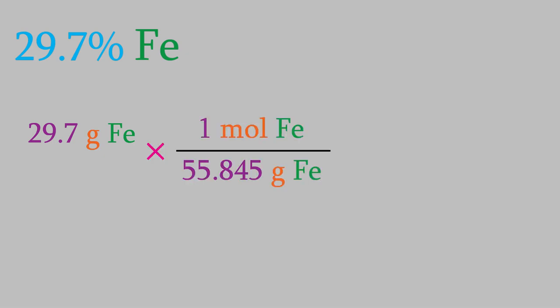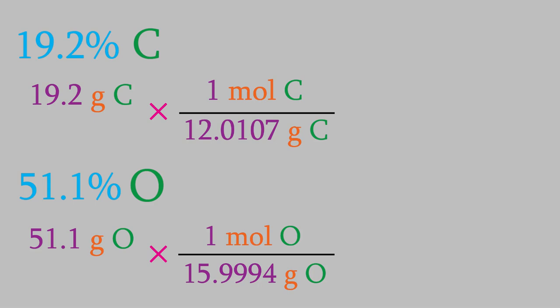So let's start with the iron. Our compound contains 29.7% iron. That means if our sample weighed 100 grams, the iron would weigh 29.7% of that, which is 29.7 grams. To change that to moles, we use the conversion factor, which we get from the periodic table. One mole of iron weighs 55.845 grams. We want grams to cancel, so we'll put the 55.845 in the denominator. And we get 0.532 moles. We can do the same for the carbon and oxygen. If our total sample weighs 100 grams, then the carbon weighs 19.2 grams, and the oxygen weighs 51.1. Using conversion factors in the periodic table, we find out that we have 1.60 moles of carbon and 3.19 moles of oxygen.